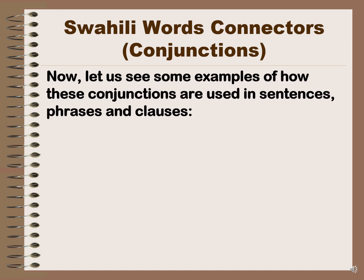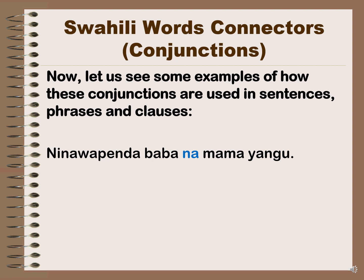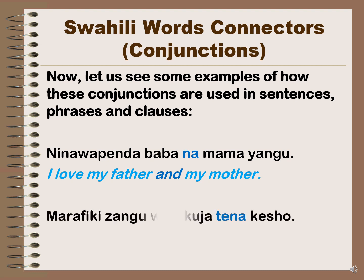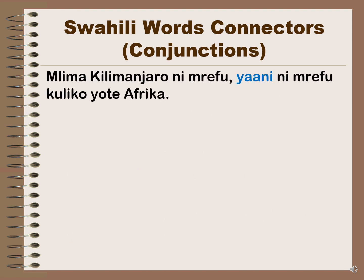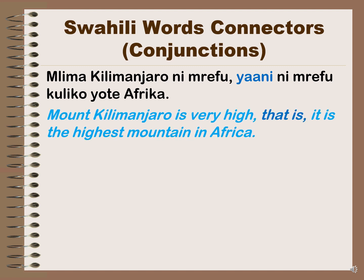Now let us see some examples of how these conjunctions are used in sentences, phrases and clauses. Number one: 'Ninawapenda baba na mama yangu' — in English: 'I love my father and my mother.' The conjunction here is 'na', which means 'and'. Next: 'Marafiki zangu watakuja tena kesho' — 'My friends will come again tomorrow.' The conjunction is 'tena', meaning 'again'. Also: 'Mlima Kilimanjaro ni mrefu, yaani ni mrefu kuliko yote Afrika' — 'Mount Kilimanjaro is very high; that is, it is the highest mountain in Africa.'